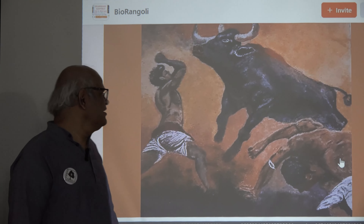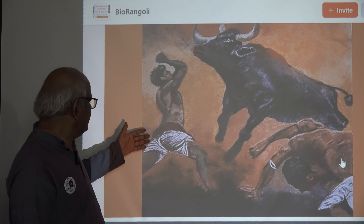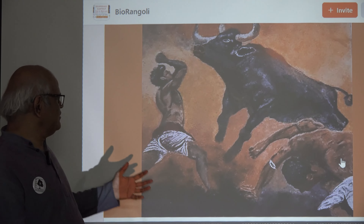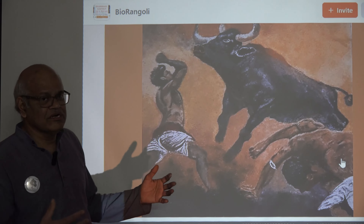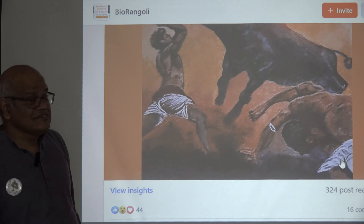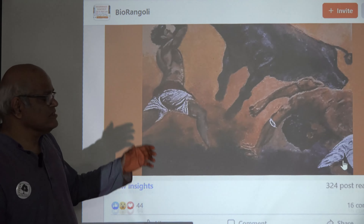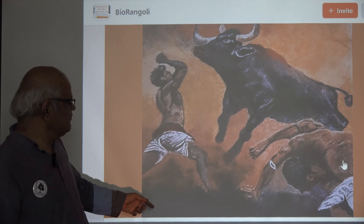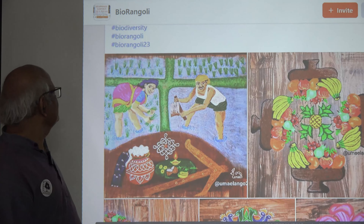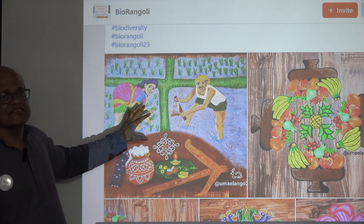Here the sport of jallikattu is depicted — jallikattu where man and the beast, the bull, have a fight and the man has to go and catch it. This is interestingly depicted here. The column is not just a column; it represents the culture and region from where it is made.